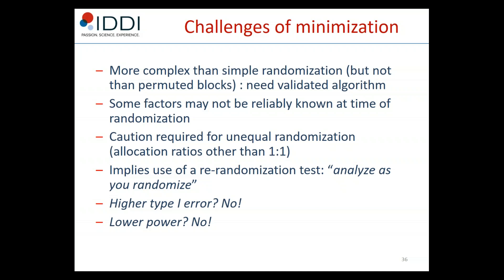Some people claim that minimization may inflate the type 1 error, but theoretically there is no reason why it should. If anything, minimization should reduce the type 1 error on average, because reducing the chance of imbalance reduces the chance of accidental bias. Others worry that minimization might reduce the power of the trial — but again, the answer is no. To address these concerns, we use the re-randomization test, which requires using a stochastic algorithm so that each allocation has an element of randomness.